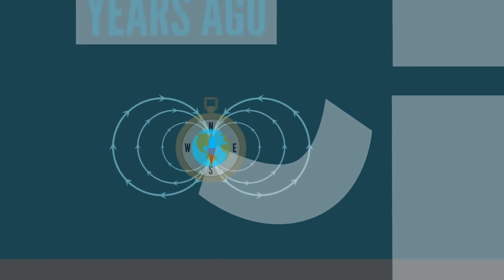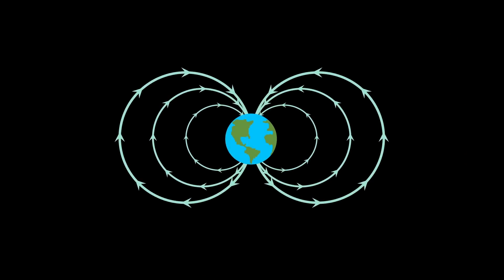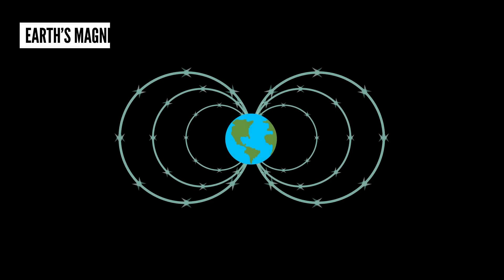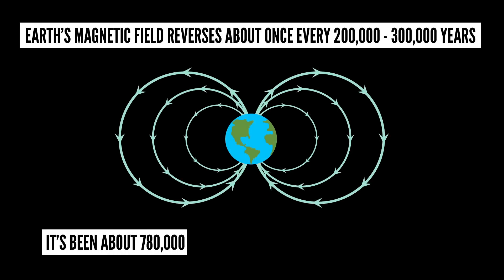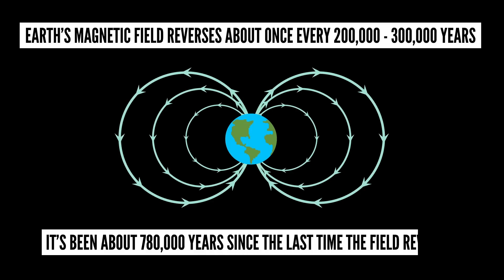But how? This actually happens relatively often - well, often relative to the age of the universe. For the past 20 million years or so, Earth's magnetic field reverses about once every 200,000 to 300,000 years. But it's been about 780,000 years since the last reversal.